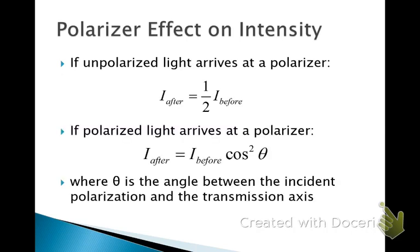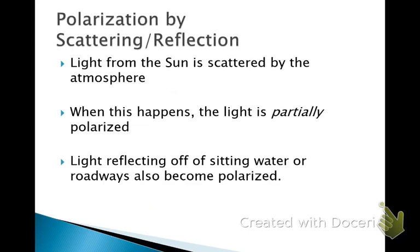But if polarized light arrives at a polarizer, then it involves the angle between the direction of the polarization of light before it goes through and the direction of the transmission axis. So, I, the intensity afterwards, will equal the intensity before times the square of the cosine of theta, where theta is the angle between the polarization direction and that transmission axis.